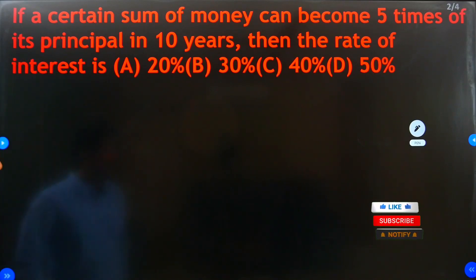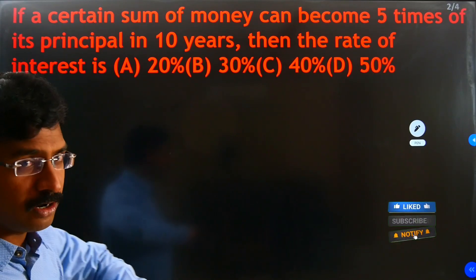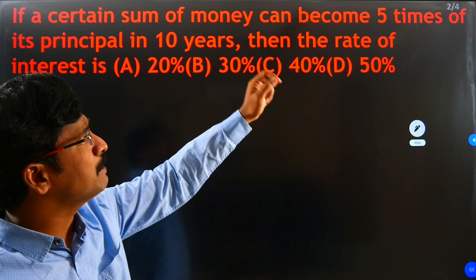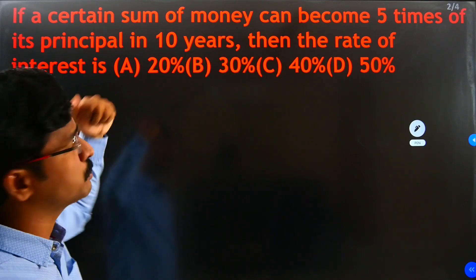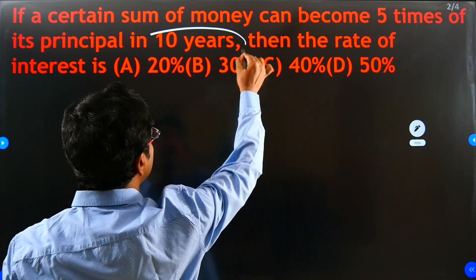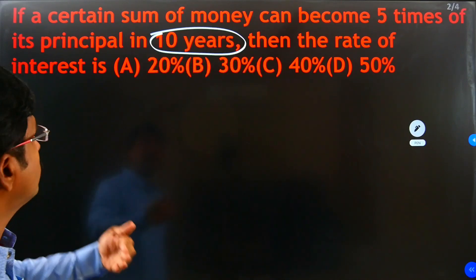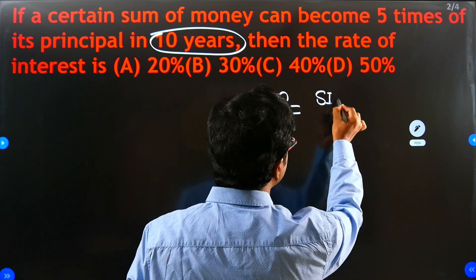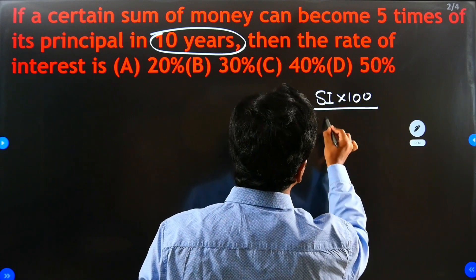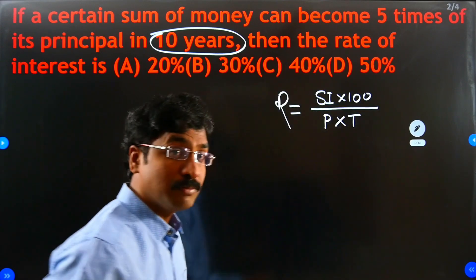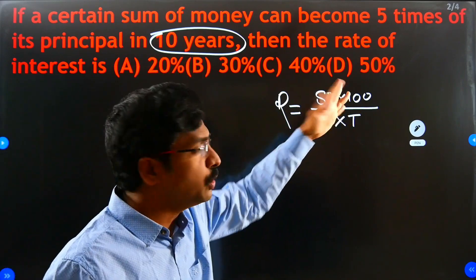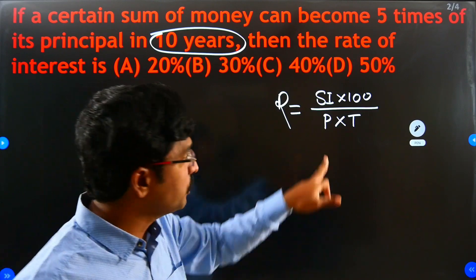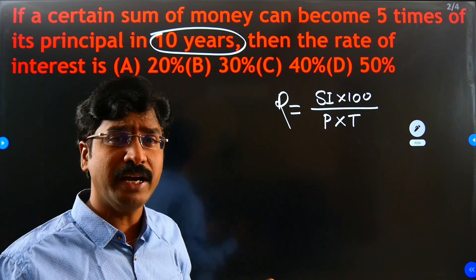If you read the question properly, you will understand what R and P are. Here is the question: if a certain sum of money becomes five times the principal in 10 years, what is the rate of interest? The rate of interest formula is R = SI × 100 / (P × T). We have the time T = 10 years, but we don't know SI and we don't know the principal P, so how can we find R?